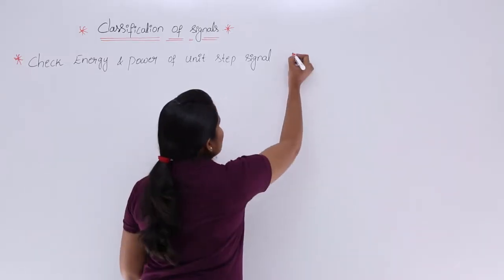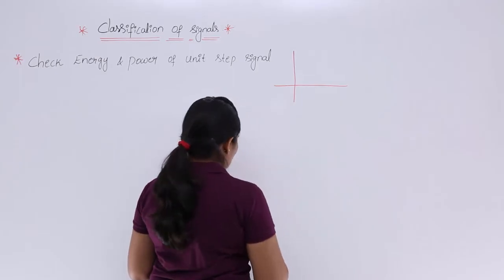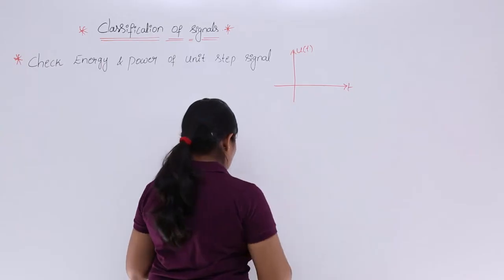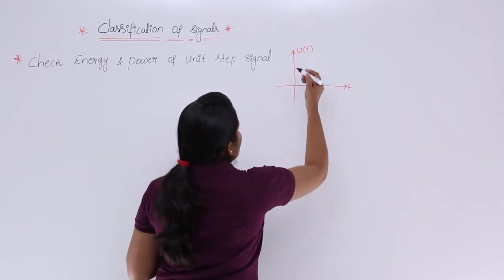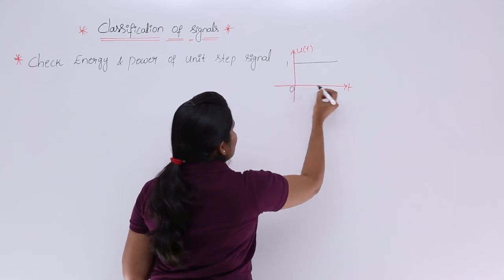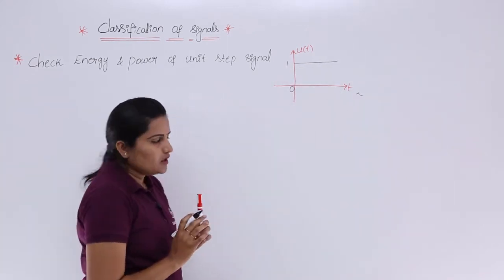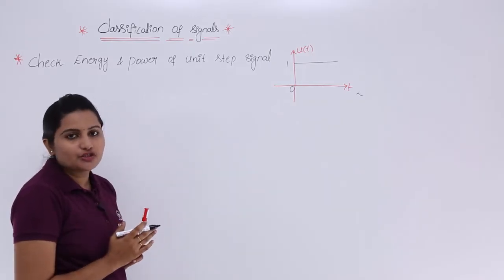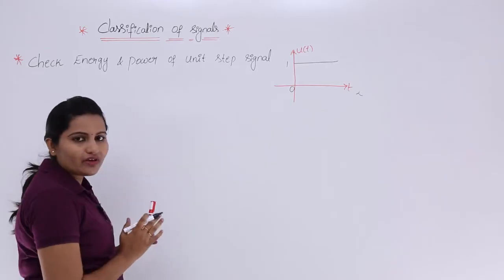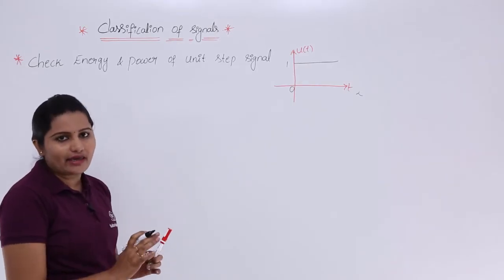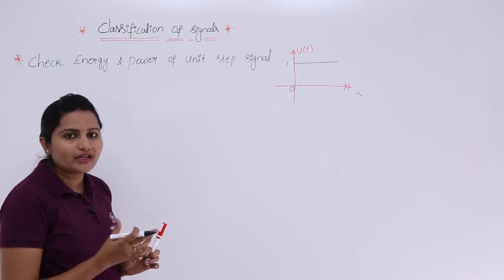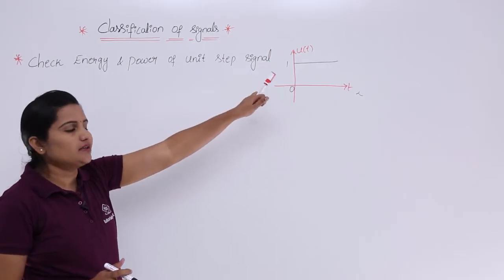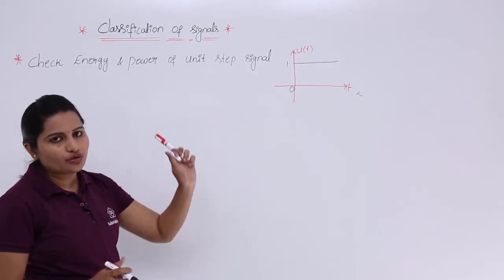The unit step signal u(t) is equivalent to 1, and here we consider the continuous unit step. From 0 to infinity it is equivalent to 1. By observing the signal itself, you can say it is an infinite duration signal, so whatever equations you want to consider for calculating energy or power must be considered over infinite duration, since infinity is included in the definition of the signal — it is continuous from 0 to infinity.